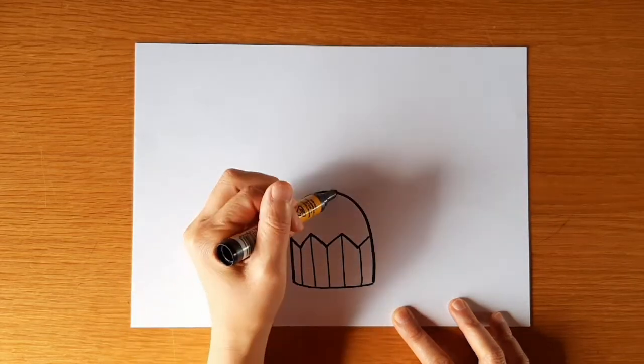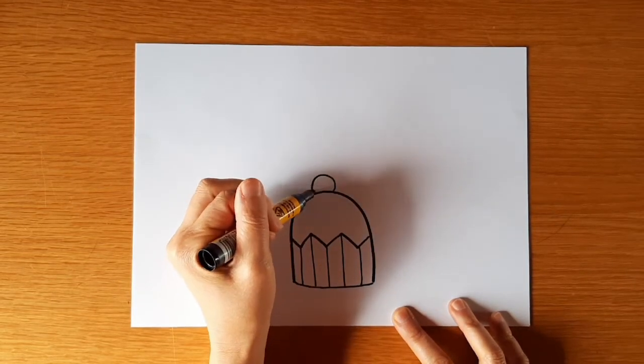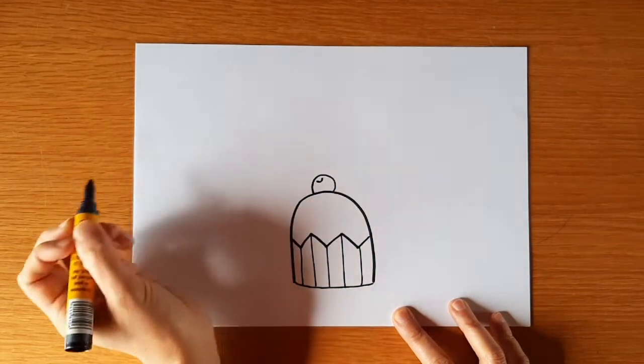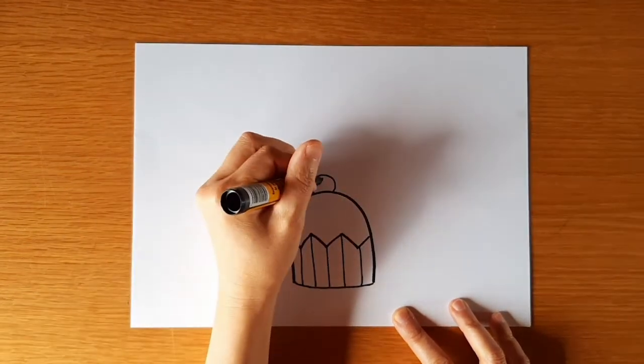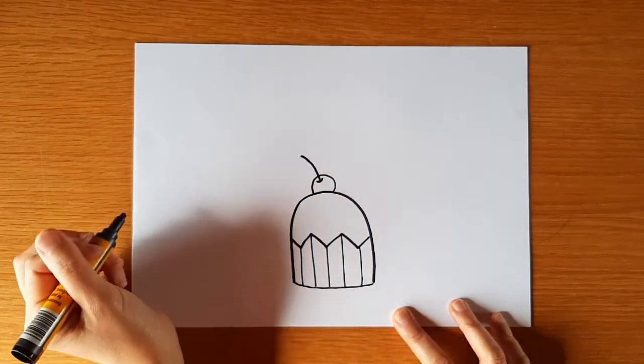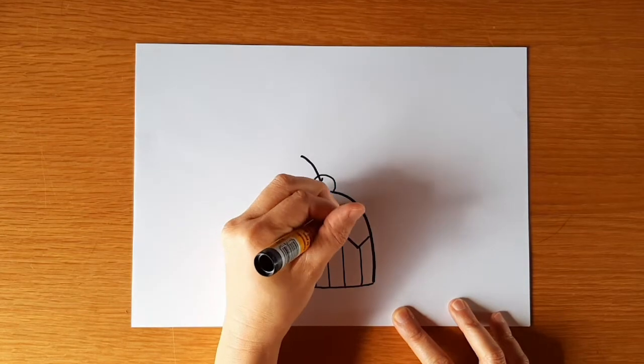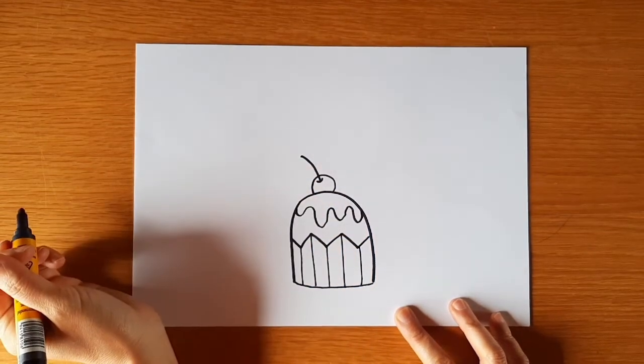Let's add a cherry on top. You draw a circular shape on top. Then a little curved line. From there comes out a stem. Let's finish off with a squiggly line for the icing. Yum, I'm starting to get hungry.